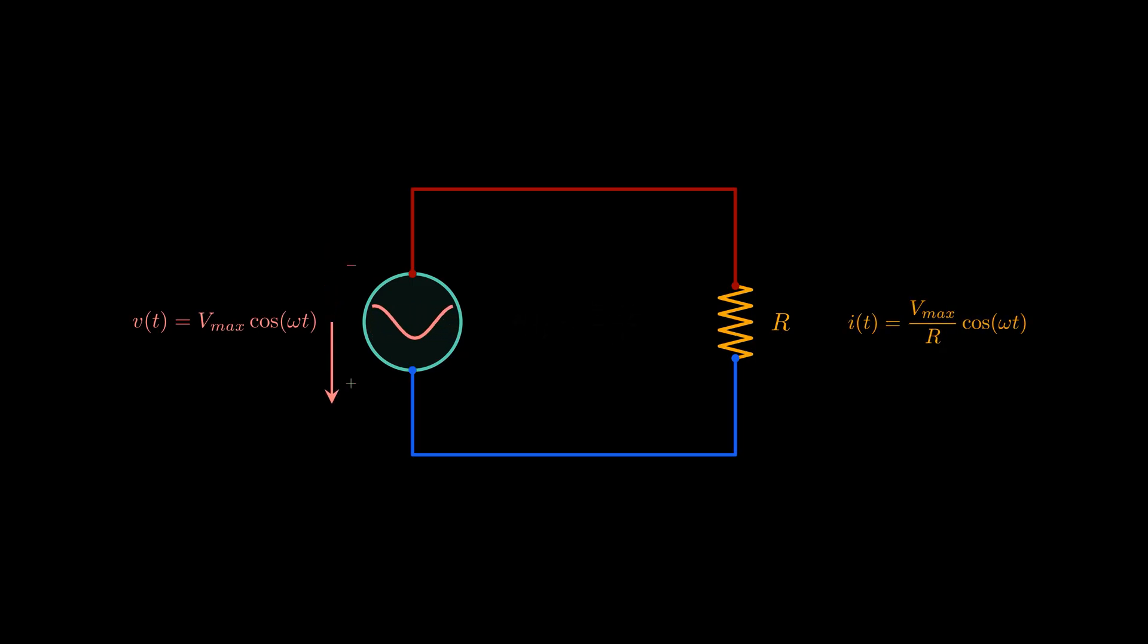So as voltage alternates around zero, electrons are pushed and pulled through the resistor without any lag. We say that the current and voltage are in phase.